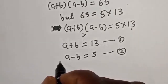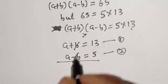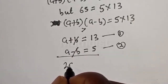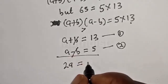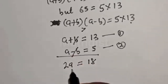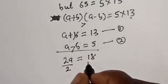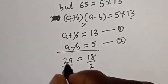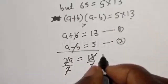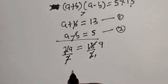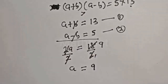Let's add equation 1 and equation 2 together. The B terms cancel, giving 2A equal to 13 plus 5, which is 18. Dividing both sides by 2, we get A equal to 9.